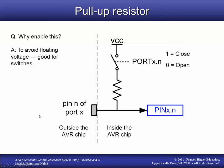We'll look at this concept more in detail later. The way we enable or disable the internal pull-up resistor is through the Port X register when the pin is configured as input — more on that later.